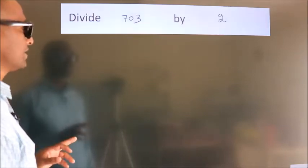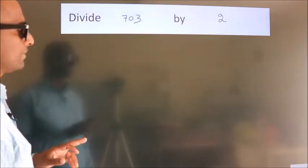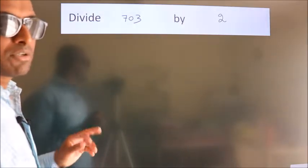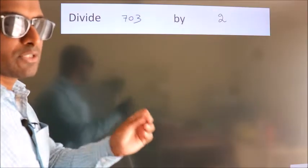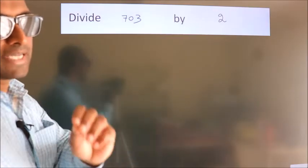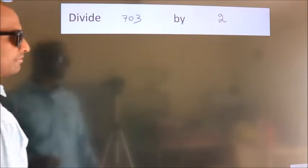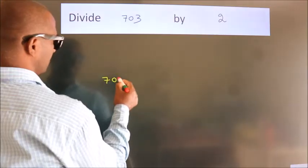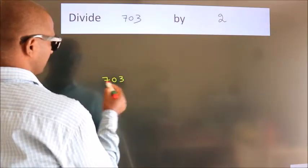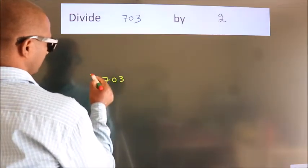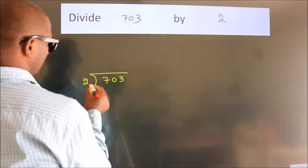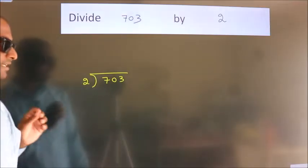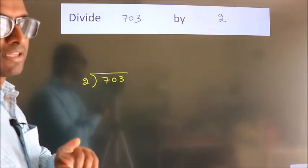Divide 703 by 2. To do this division, we should frame it in this way: 703 here, 2 here. This is your step 1.